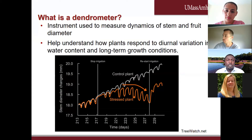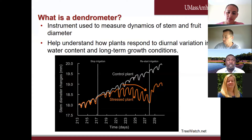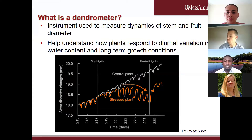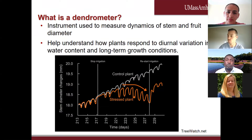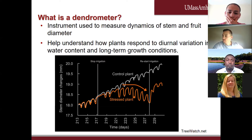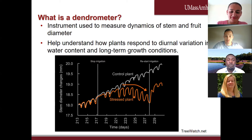Basically, a dendrometer is like an automated caliper — an instrument you can use to measure the dynamics of stem and fruit. The good thing about the dendrometer is that it is connected to a data logger, so once connected you're able to monitor it online, which makes it a very good tool for growers to see what's happening on the farm. When you look at a dendrometer, you actually get two kinds of readings: you can understand long-term growth conditions or you can understand the response to water stress.